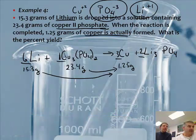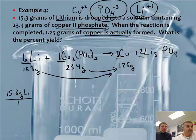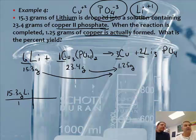So we have to do a gram-gram problem. If you can do this problem, guys, you can do anything in this unit. You are good to go. Because you can write and balance an equation, you can do limiting reactant stoichiometry, and you can do percent yield.